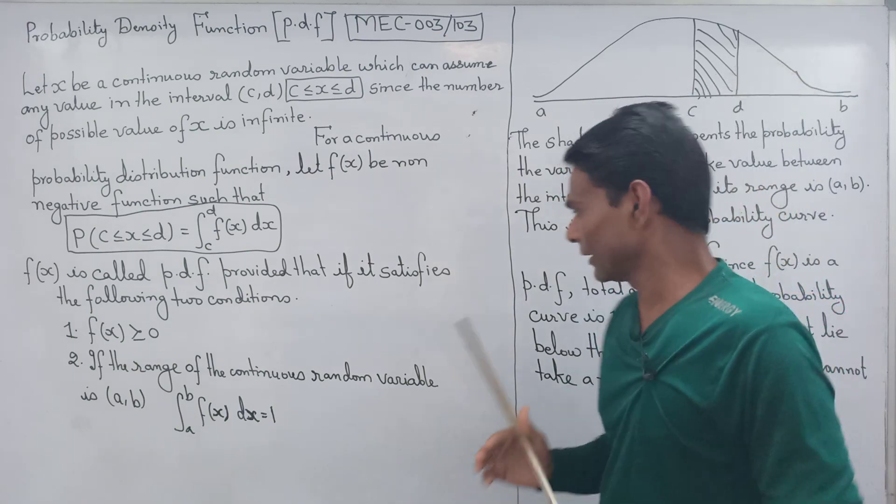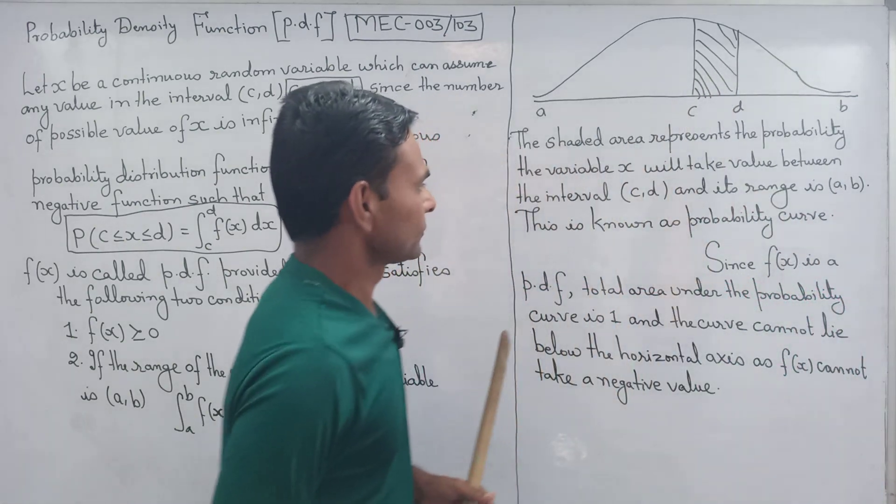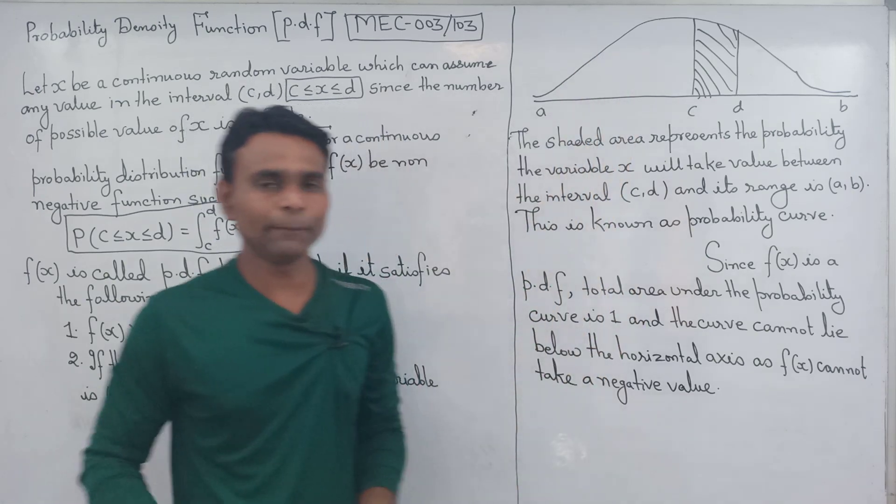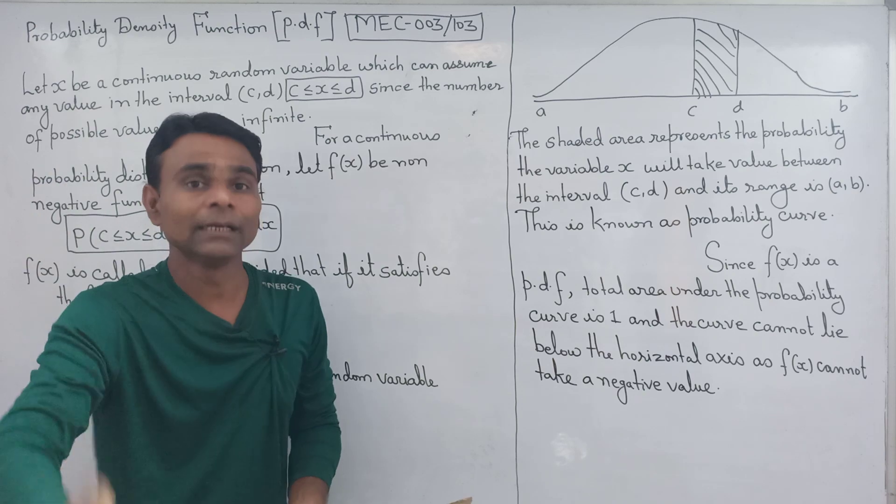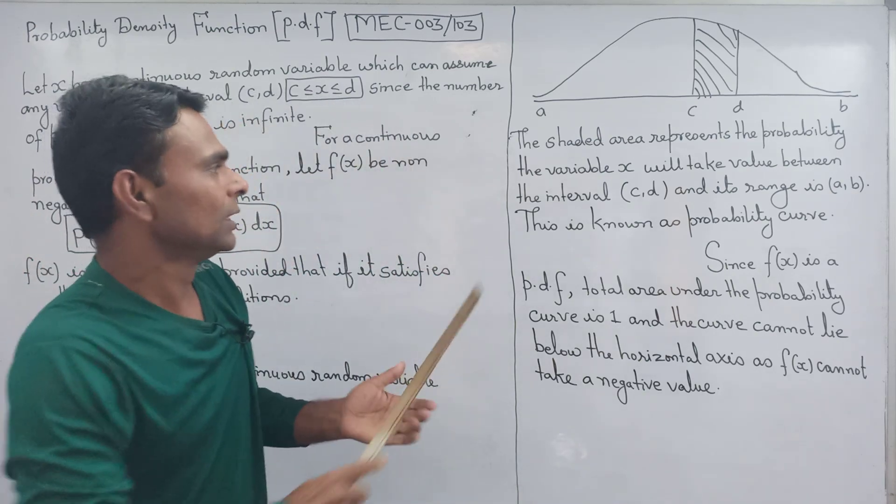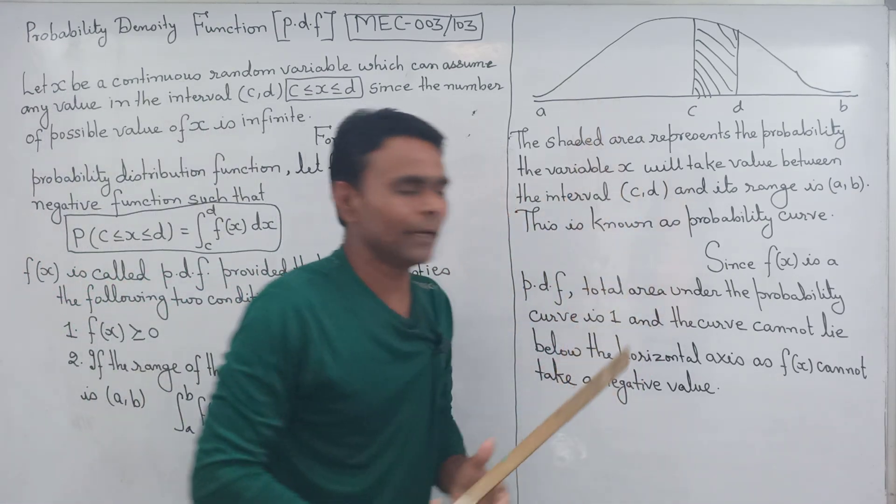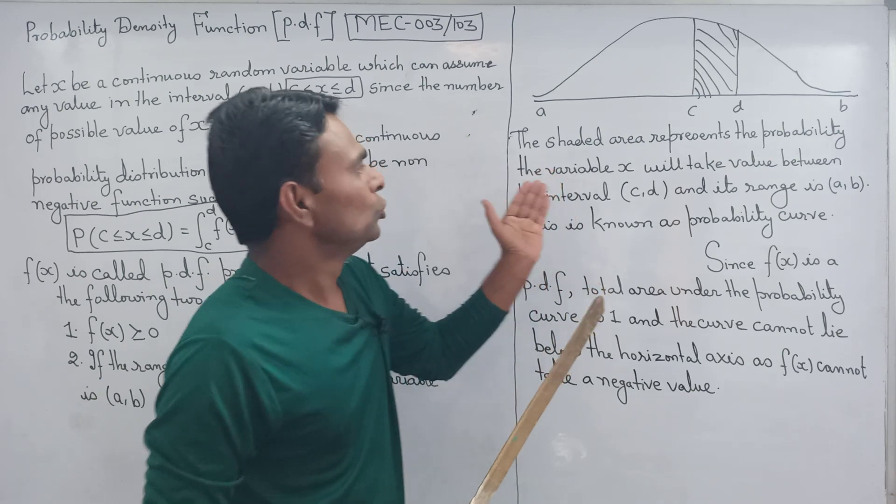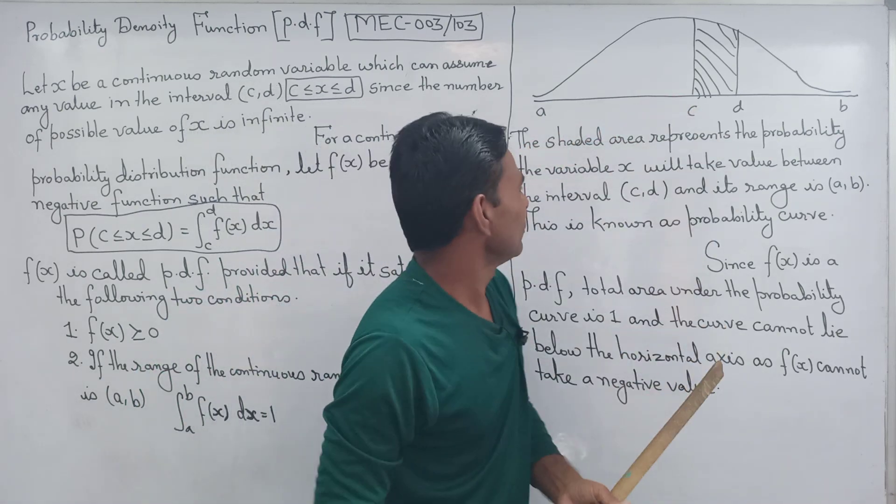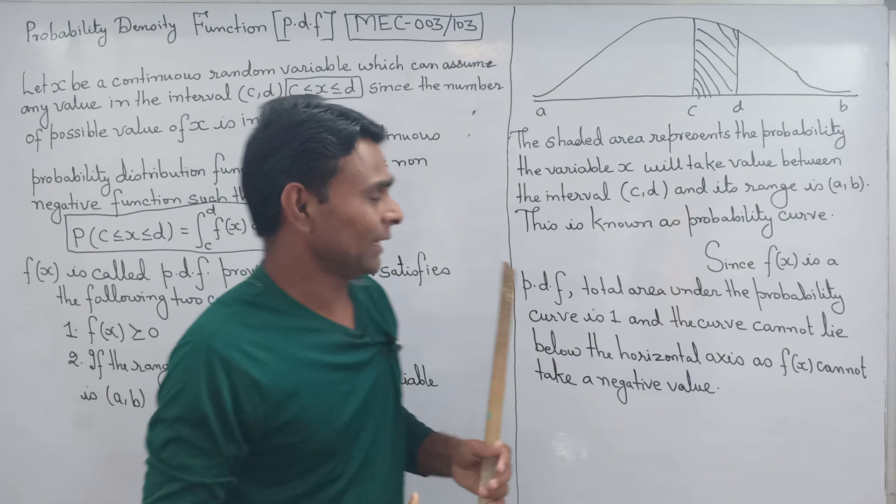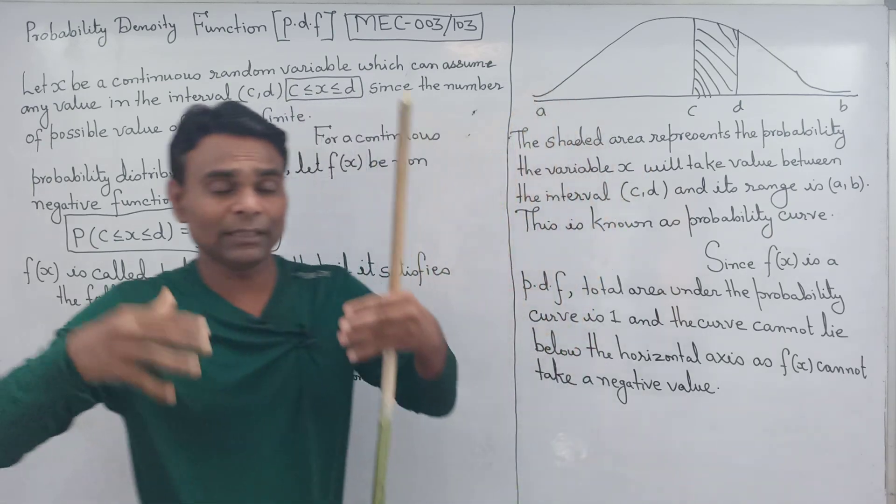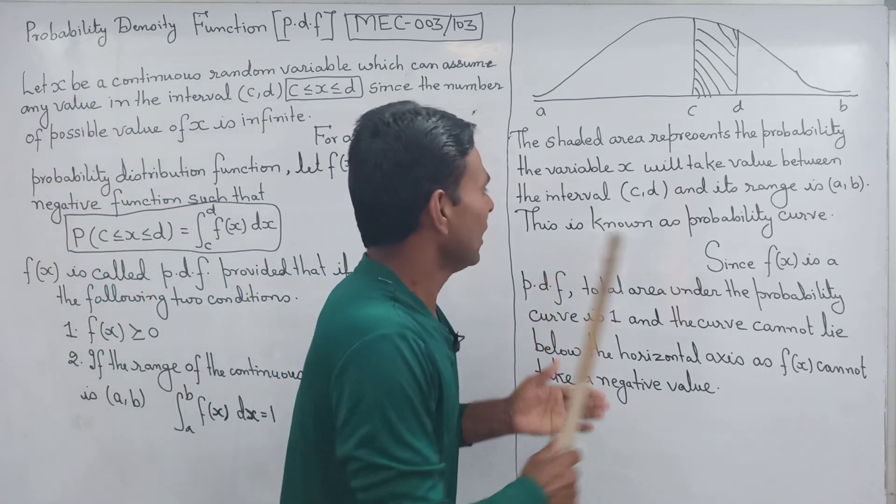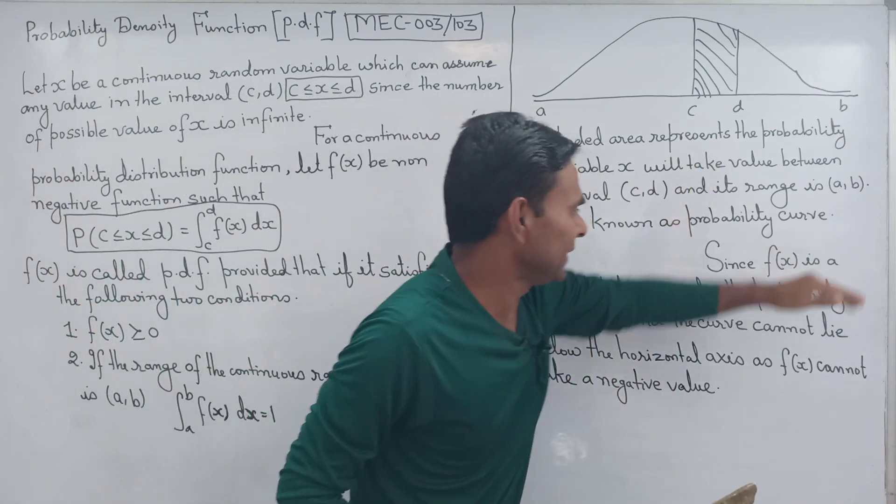Let me draw a picture, which we call a probability curve. The shaded area represents the probability that the variable X can assume. X will take values between the interval CD within range AB. This shaded area shows the probability, and this is known as the probability curve.